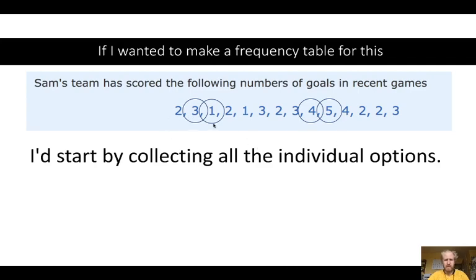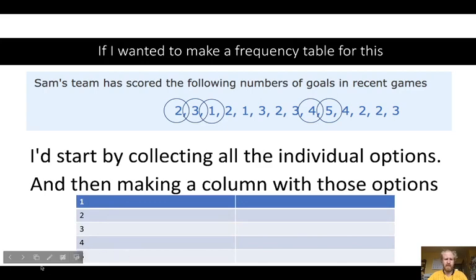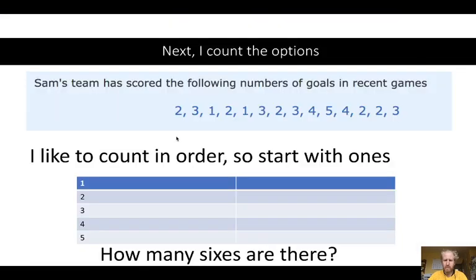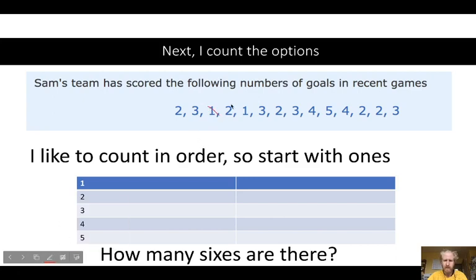So in this case, I start by collecting all the individual options: 1, 2, 3, 4, and 5. Those are my options, so I'll make a column with those. Then I just count — how many times does a 1 show up? I got two 1s. How many 2s? I got 1, 2, 3, 4, 5 — so five 2s.